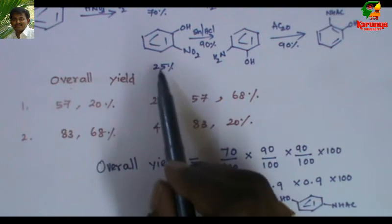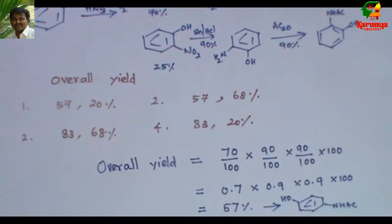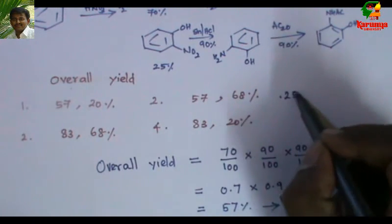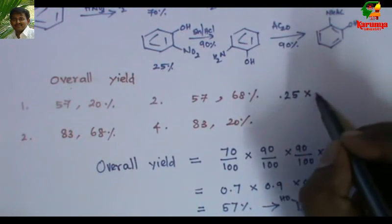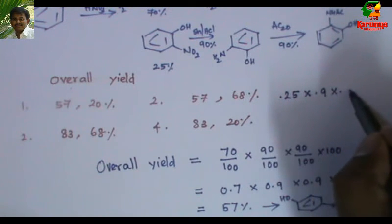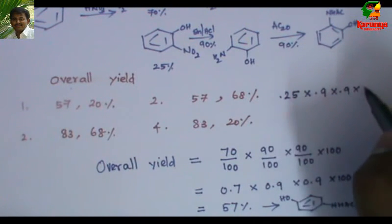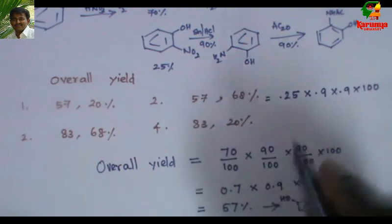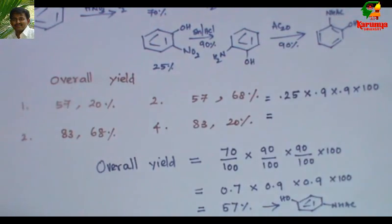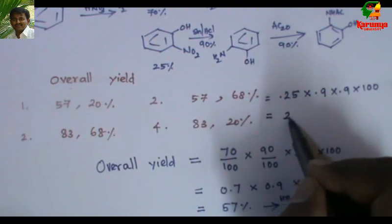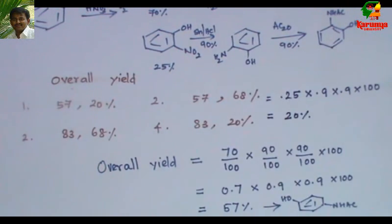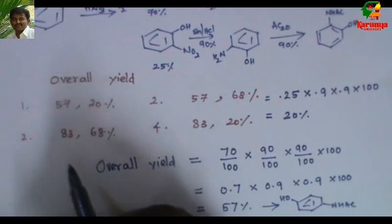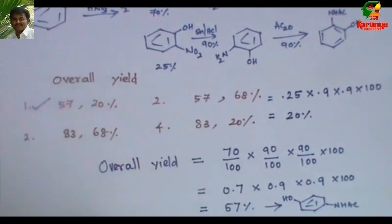What will be the overall yield for 2-hydroxyacetanilide? Once again, we calculate: 0.25 × 0.9 × 0.9 × 100. If you calculate, it will be around 20%. So the final answers are 57% and 20%.